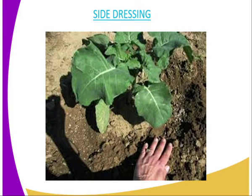The fourth one is side dressing. In side dressing, this is the method which is normally applied only to crops after the crops establish themselves in the field — that is after germination has taken place and also growth has been effected.